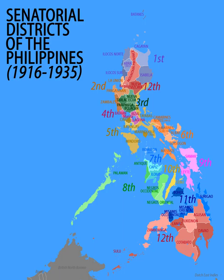Tenth District — Provinces: Cebu, Bohol, Misamis, Surigao. Later additional provinces: Misamis Occidental and Misamis Oriental, resulted from the division of Misamis Province, formally divided in 1929 but only implemented in 1939.